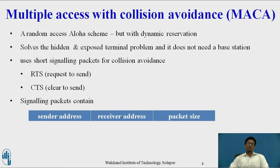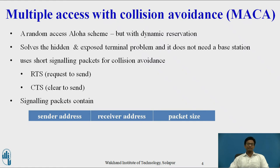The first technique is MACA — Multiple Access with Collision Avoidance. It is a Random Access Aloha Scheme with Dynamic Reservation. This scheme solves the Hidden and Exposed Terminal Problem with the help of RTS and CTS packets. This scheme does not require any Base Station. RTS and CTS packets are short signaling packets which are used to avoid collision.